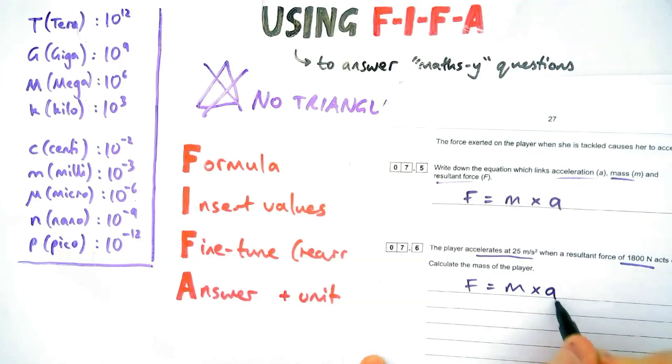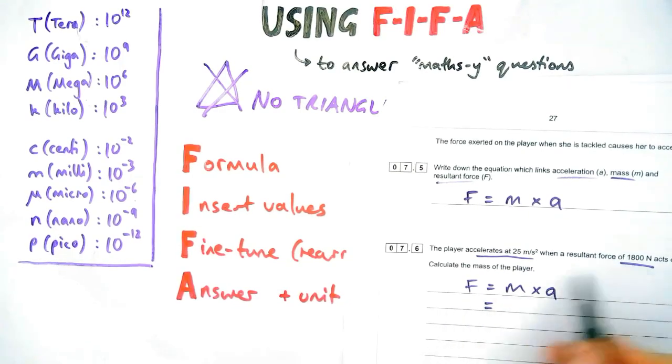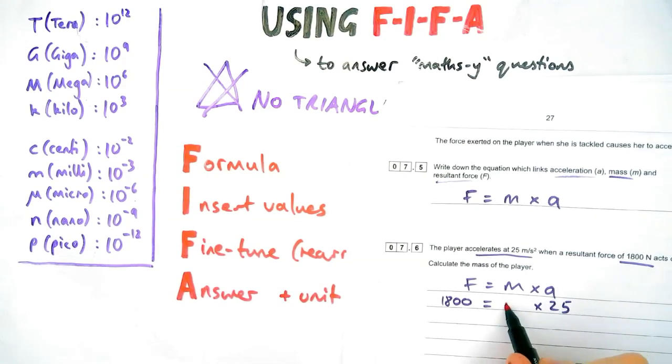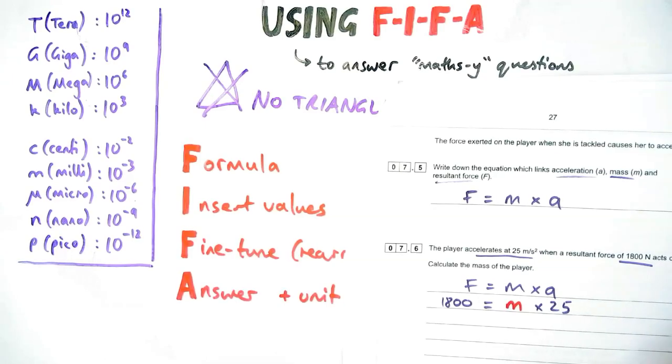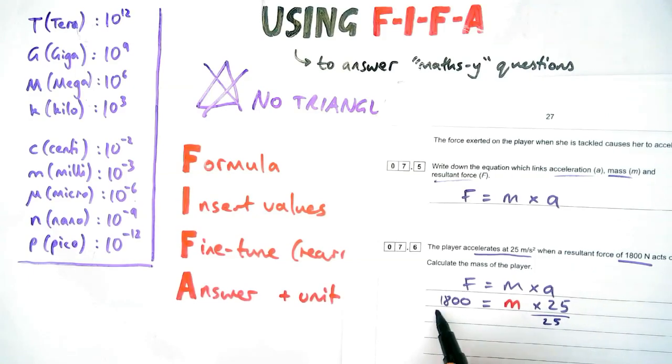Now the question asks us: the player accelerates at 25 meters per second squared, the force is 1800, calculate the mass. So my first stage, write down the equation F. Then we're going to insert our values. So underneath F I'm going to put down the value for the force, and underneath a I put down the value for the acceleration. M I don't know, so I leave it as an m or I can write a question mark or an x or something similar.